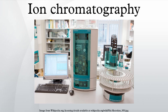A sample is introduced either manually or with an auto-sampler into a sample loop of known volume. A buffered aqueous solution known as the mobile phase carries the sample from the loop onto a column that contains some form of stationary phase material. This is typically a resin or gel matrix consisting of agarose or cellulose beads with covalently bonded charged functional groups.